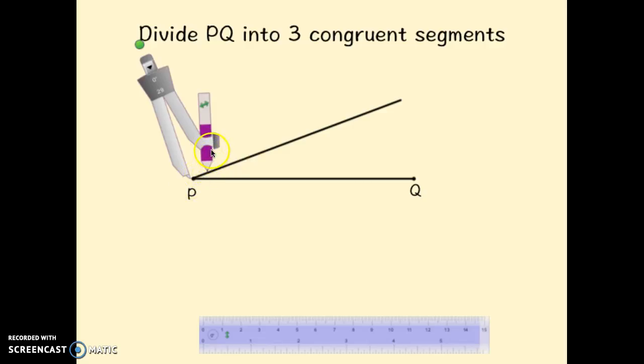So from point P, you can open this any amount you want. Make sure you're not opening it too far that your compass won't be able to reach, but I'm going to draw one segment right here. I'm going to move this to that point and draw a second arc, making a second segment. And then I'm going to move this to that point and draw a third arc, and that's going to make a third segment.